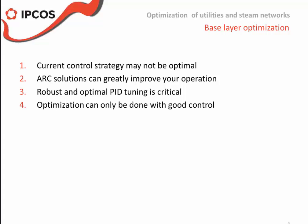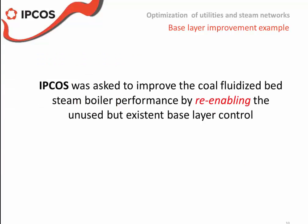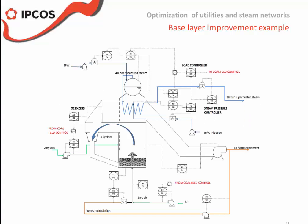We have a first case study at a utilities plant in France. Here we did a base layer improvement. We were asked to improve the coal fluidized bed boiler performance by re-enabling unused but existent base layer control. In other words, almost every single PID loop was in manual, and attempts to make them work had not been successful, but we were able to re-enable the whole base layer system.